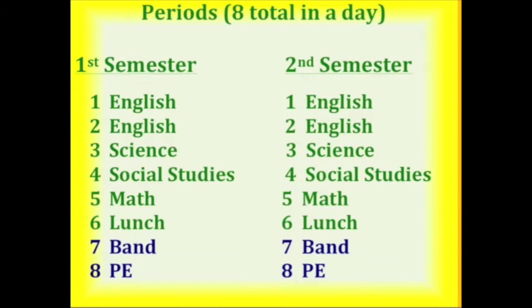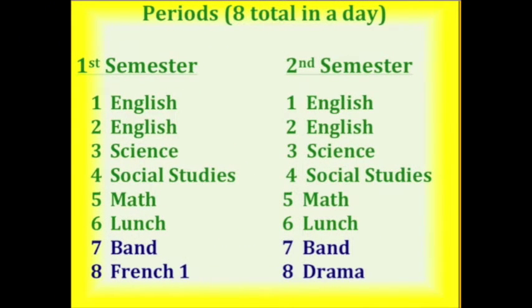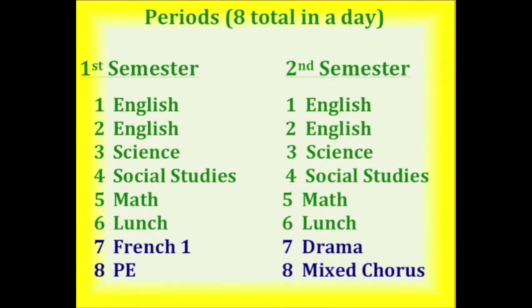Here is an example of what your schedule may look like if you choose two full-year classes. If you chose band and PE, both full-year classes, your schedule may look like this — you would have these classes for the entire school year. You also have the option of choosing one full-year class such as band, and taking two other semester-long classes such as French and Drama. Your third option would be to have all four elective choices as semester-long classes. For example, first semester you would have French, then second semester Drama; you would start in PE, and at the semester change to Mixed Chorus.